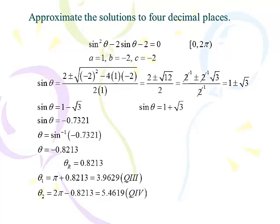Working the left side: sine θ equals 1 minus √3, which is negative 0.7321. Sine is negative in quadrants 3 and 4. We do the inverse sine and get θ equals negative 0.8213 — that's our reference angle. We add it to π for the quadrant 3 angle, and subtract it from 2π for the quadrant 4 angle. That gives us two answers: 3.9629 and 5.4619.